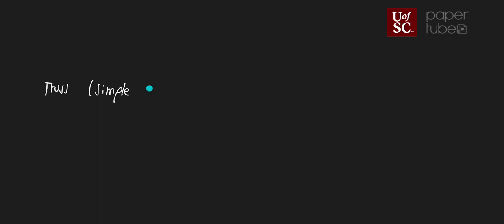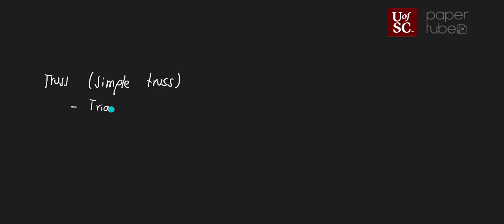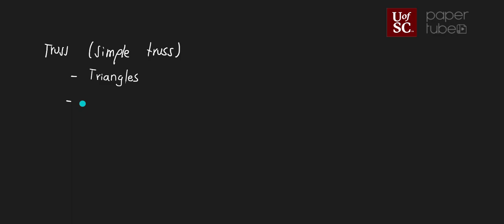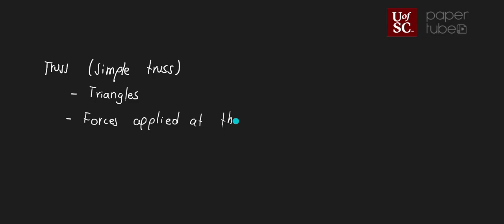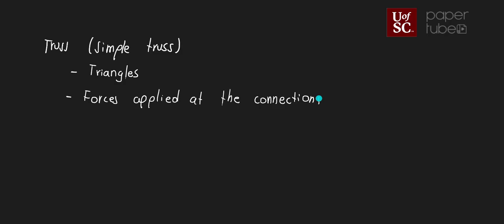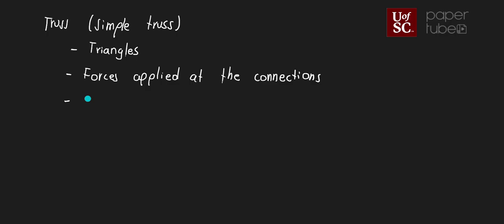A simple truss is one that is built out of triangles. All the forces are applied at the connections, and all the connections are smooth pins.